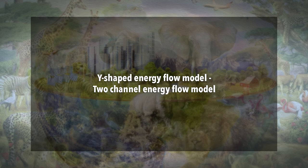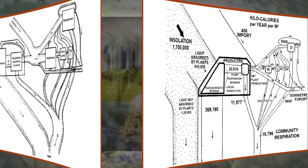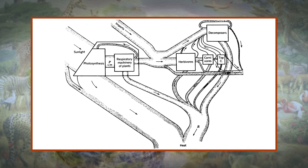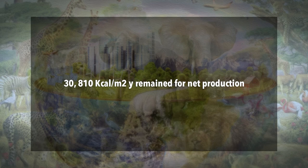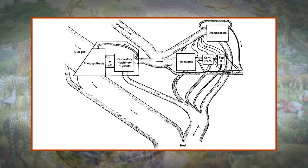Now let us discuss the Y-shaped two-channel energy flow model. Following the example of Lindeman, several authors described energy flow models for different kinds of ecosystems. Two illustrations are: first, Teal (1957) prepared an energy flow diagram of Root Spring in the USA; second, H.T. Odum (1957) prepared an energy flow model for Silver Springs, Florida, USA. In Teal's model for Root Spring, most of the energy-rich material eaten by heterotrophs entered the system as plant debris. In Odum's model for Silver Spring, most of the heterotrophs' food chain was produced by living green plants. In Root Spring, the chain began with dead plant parts; in Silver Spring, the chain began with live plant parts.